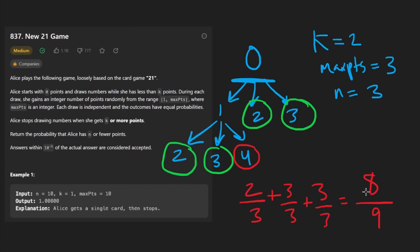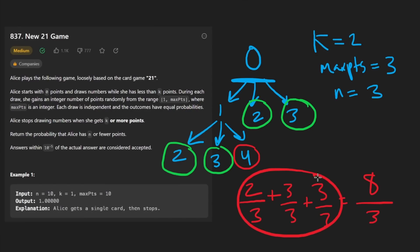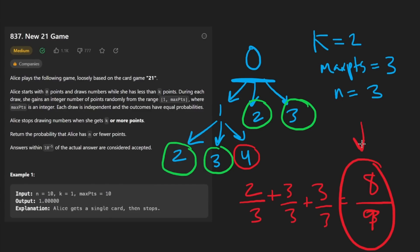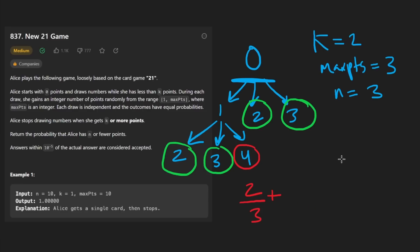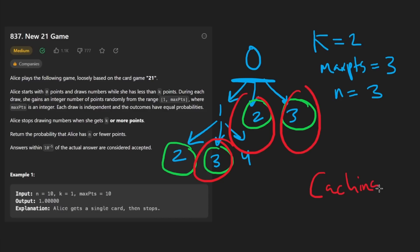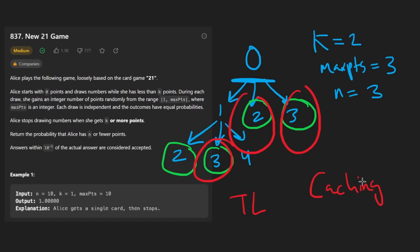A very naive way to calculate the probability here would be to total up the good nodes - the good base cases where we didn't exceed N - and divide by the total number of leaf nodes, which gets us four fifths. But remember, each choice is an equal probability. We need to weigh each branch equally by taking the average: two thirds plus one plus one, which gives us eight over nine. These sub-problems are going to repeat, so we can apply caching. But this approach gets time limit exceeded on LeetCode.